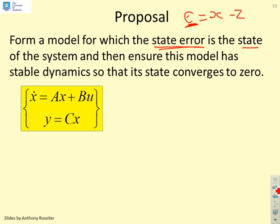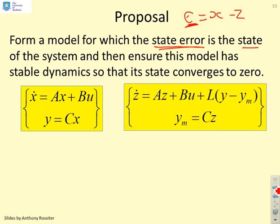Here's how we do it. We've got our original process, there it is. Now we're going to define our model with a slightly different formulation. You'll notice we've added this extra term here which has got the output error in it, y minus y_m. And this of course is our measurement because we can measure y.